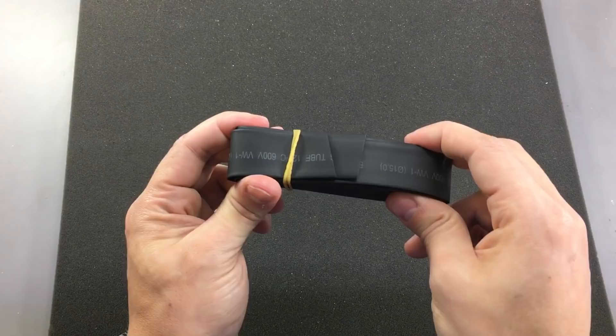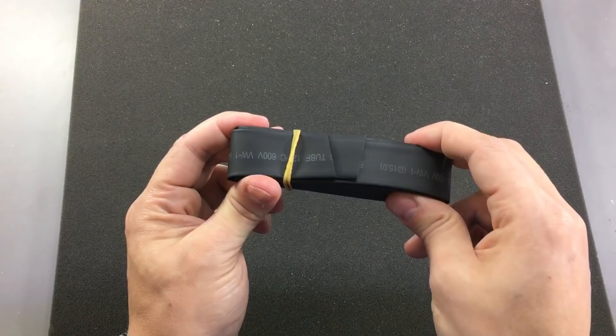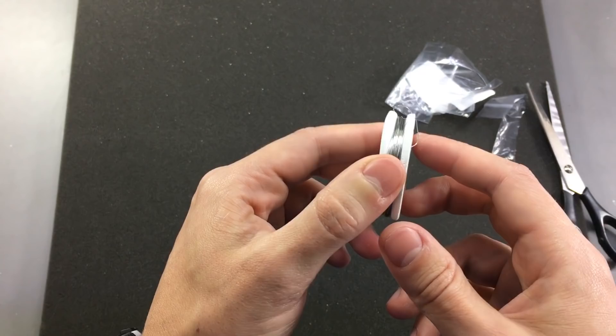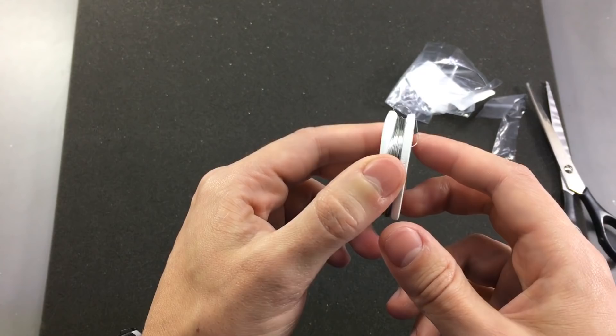And the last item in this mailbag video is a spool of Nikrom wire. This spool is 10 meters long and just 0.3mm thick Nikrom wire. I've never used this kind of wire before but I'm gonna tell you what I need it for.